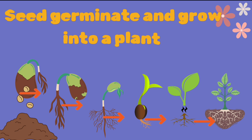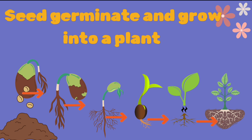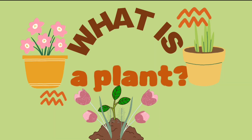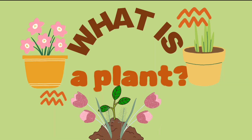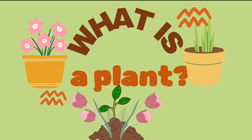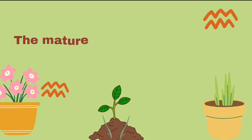The plant reaches a mature stage. Seeds germinate and grow into a plant. Germination is the phase of plant growth when the seed begins to sprout. Plants are living things that grow from the soil, take light from the sun, and make their own food. This process is named photosynthesis.